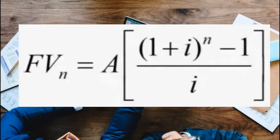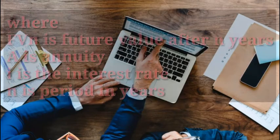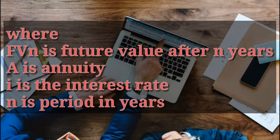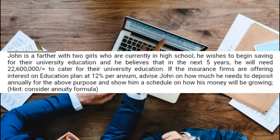The formula for future value of annuity is: FVn equals A into brackets one plus i, power n, minus one, out of i. Whereby FVn is the future value after n years, A is the annuity — the amount of money that will be paid every year over a period — i is the interest rate, and n is the period in years. Let's do an example.